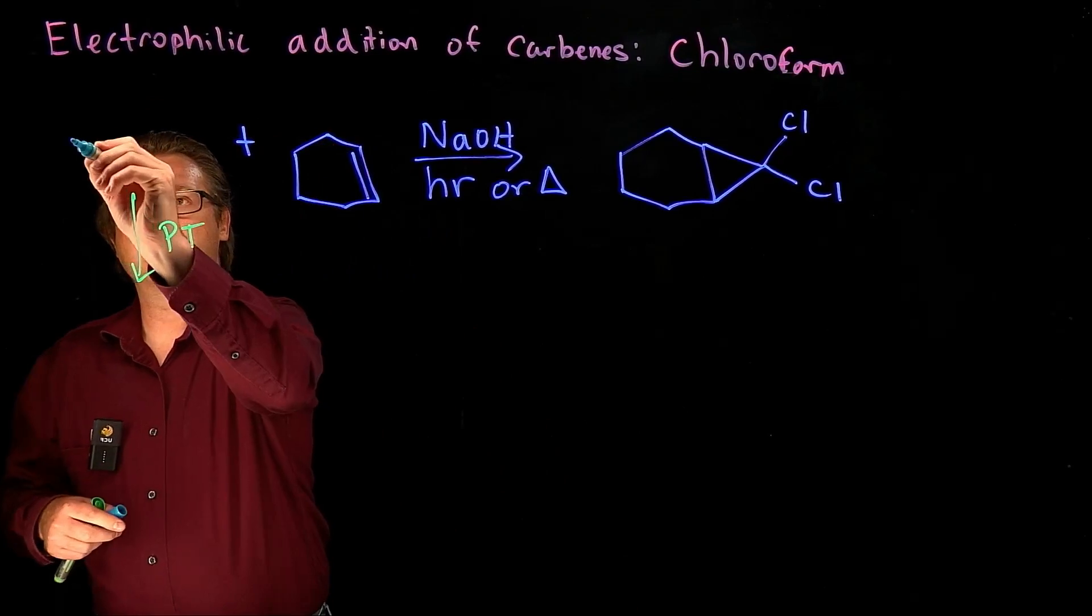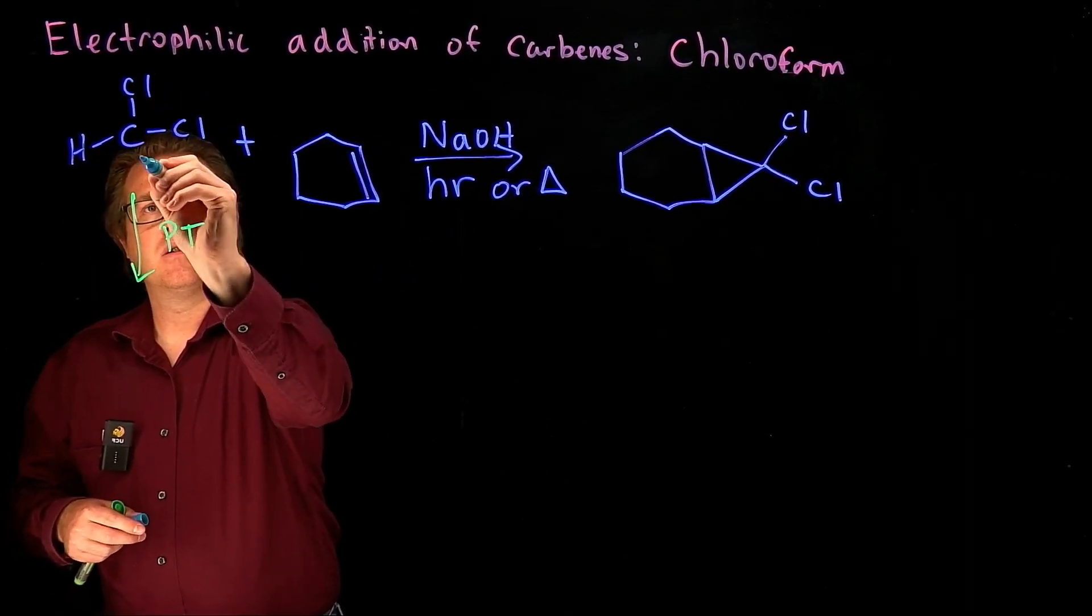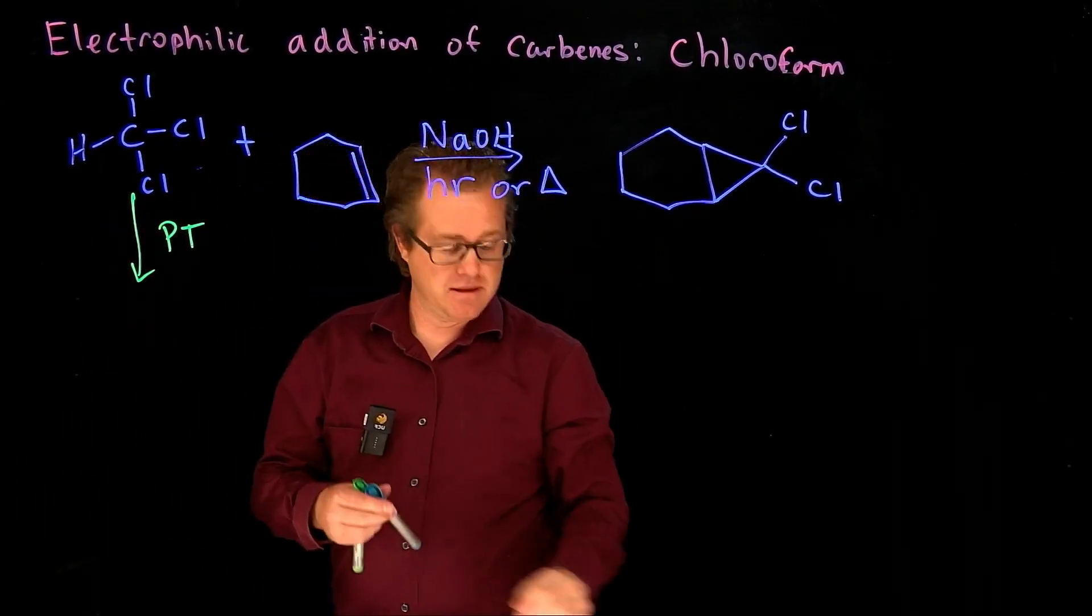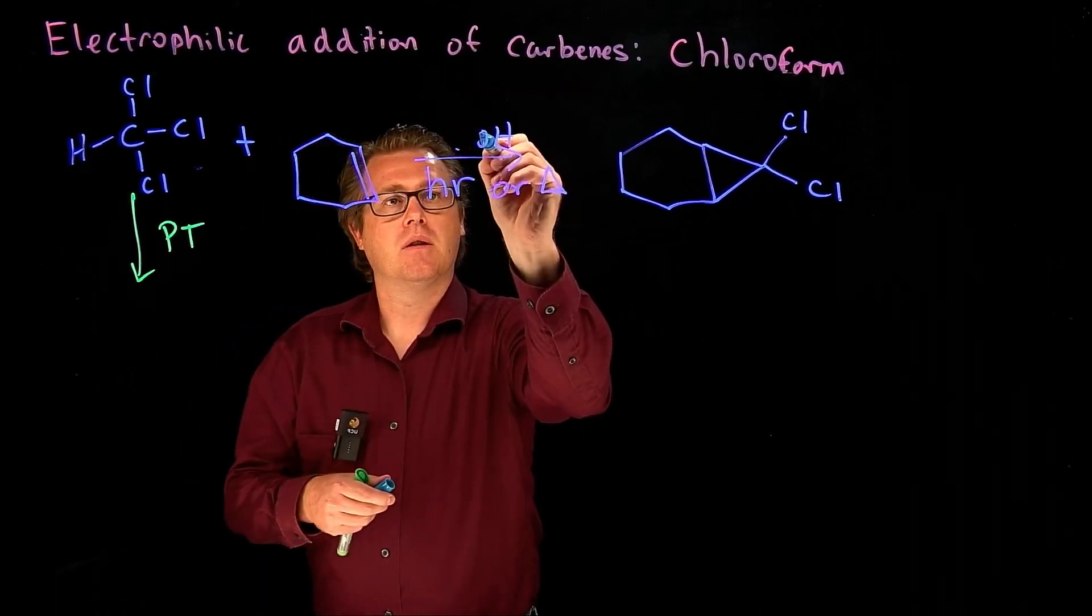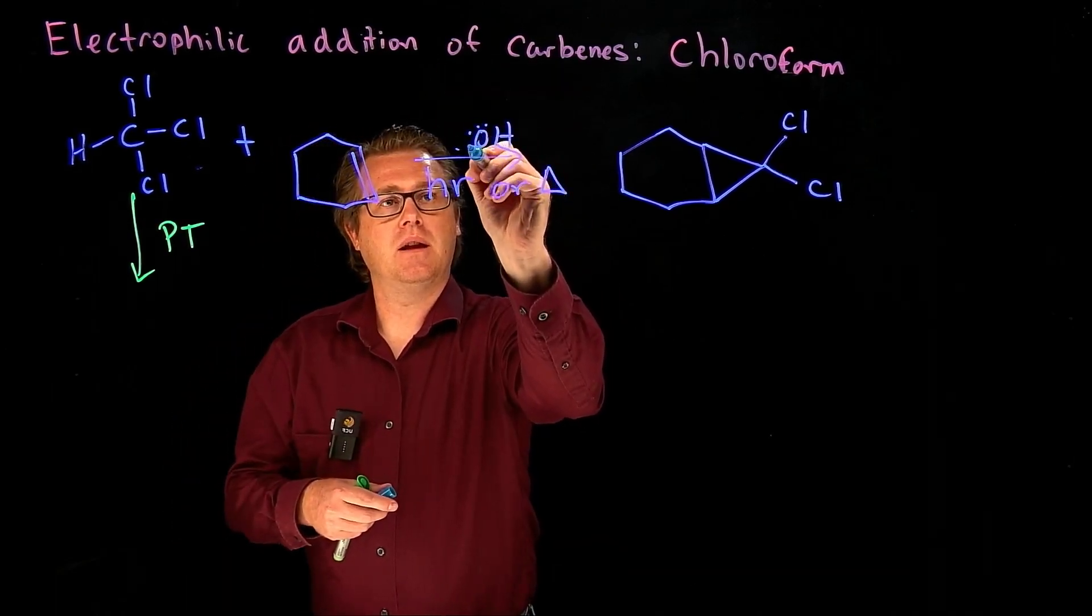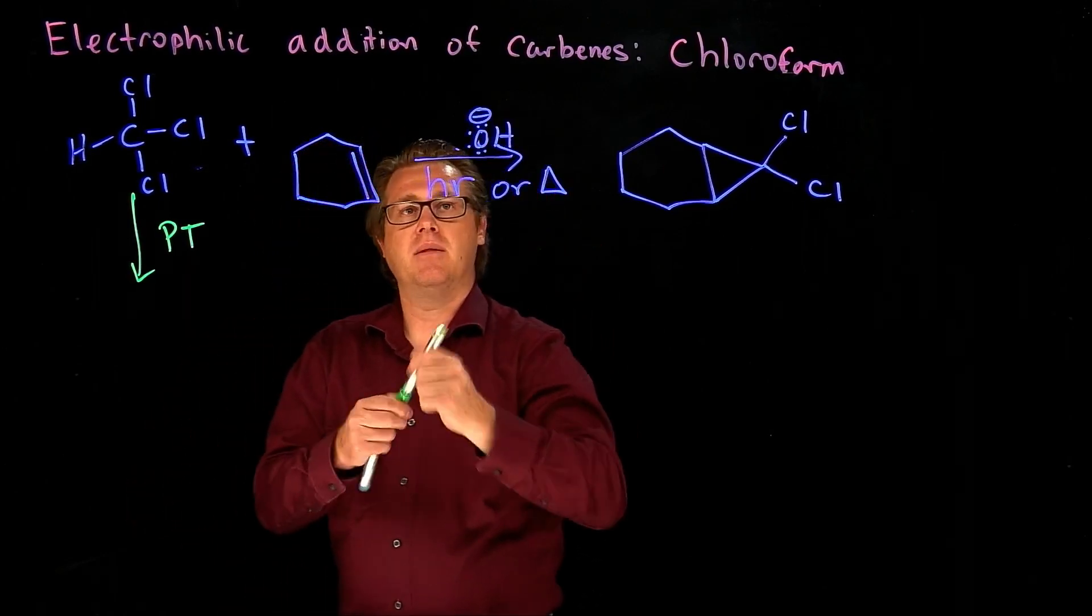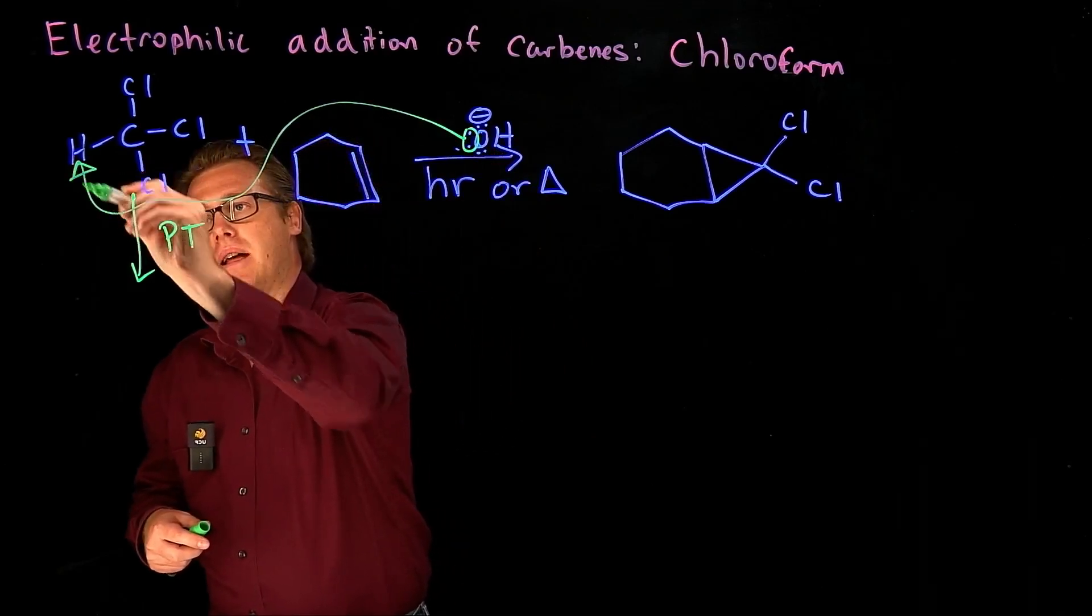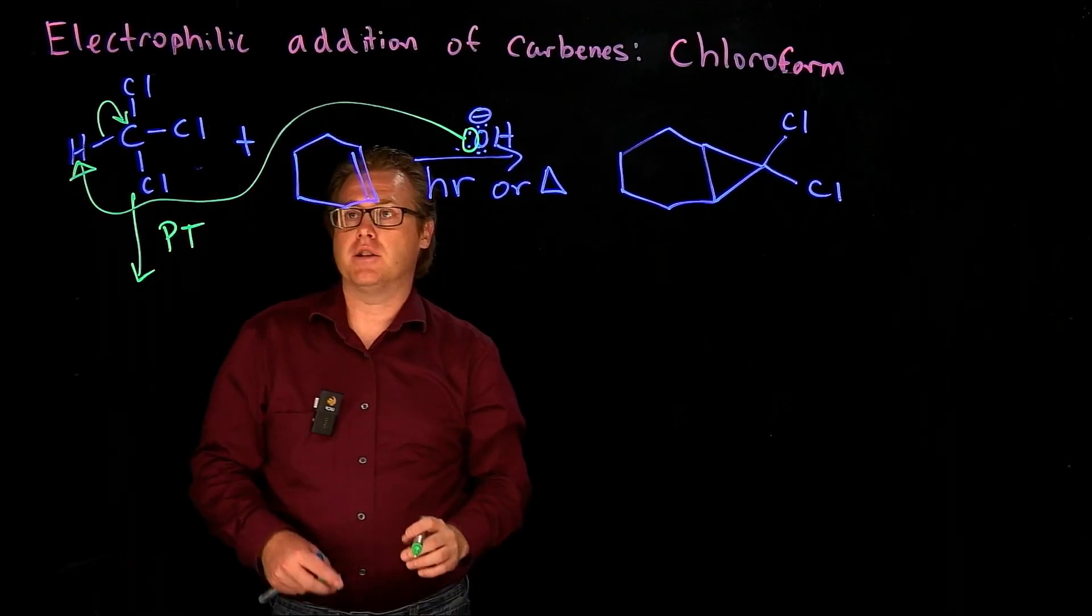So let's draw out this. So there's our chloroform right there. And we have base present. So let's draw that out. So that's going to be negatively charged. And so that's going to come in, grab that proton, and put the two electrons onto that carbon.